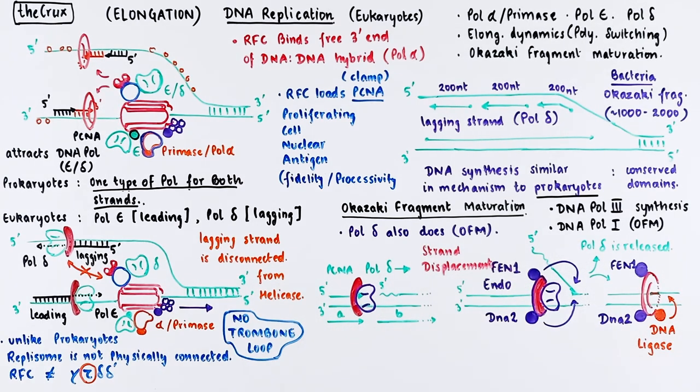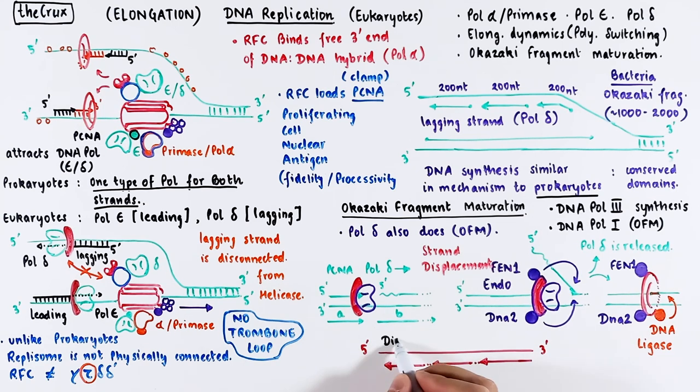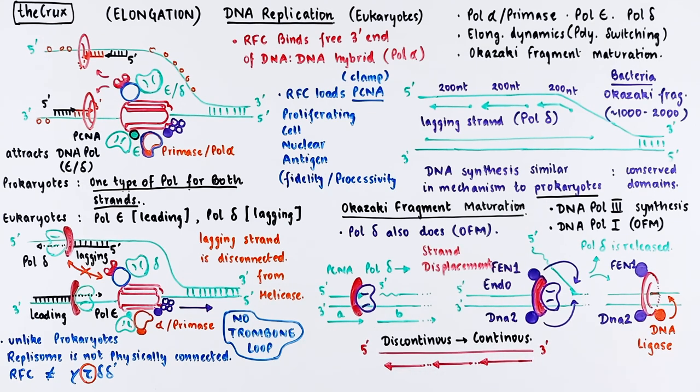The overall principle of this maturation is the same as we saw in prokaryotes. You should check it out if you need more details. So finally, this converts the discontinuous daughter lagging strand to a continuous DNA strand. And that is all for elongation. In the next video, we will see how DNA replication is terminated.